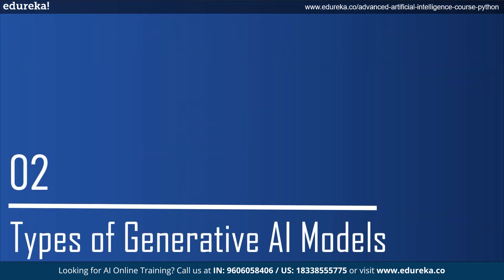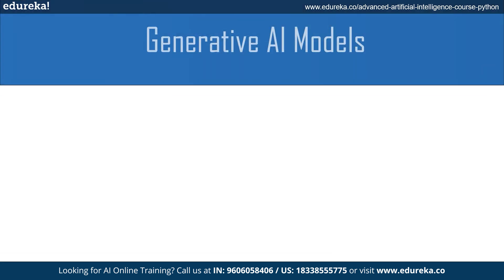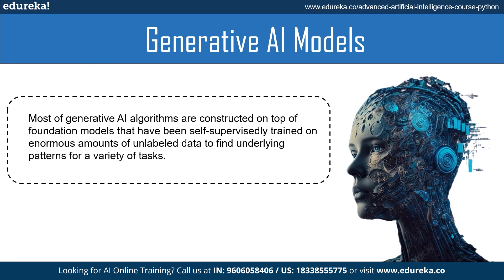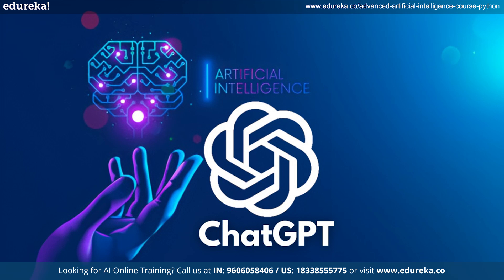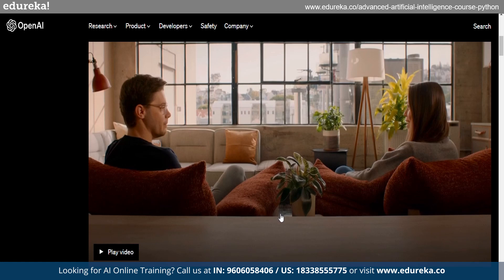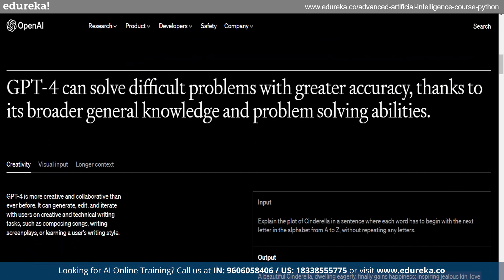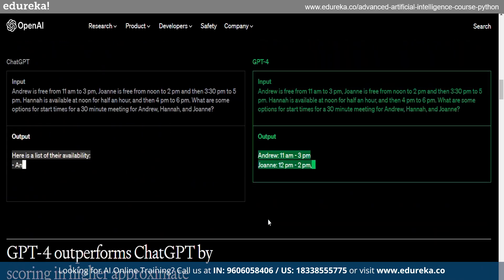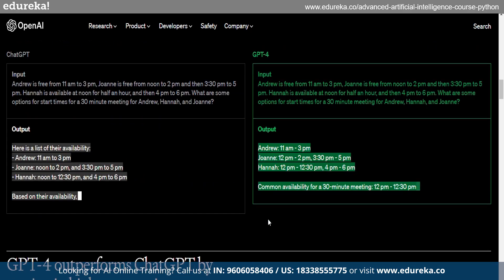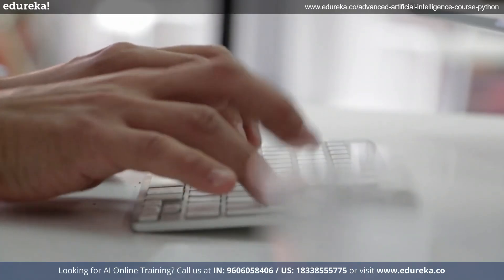Next, let's talk about the types of Generative AI models. Most Generative AI algorithms are constructed on top of foundation models that have been self-supervisedly trained on an enormous amount of unsupervised data to find underlying patterns for a variety of tasks. One example is ChatGPT, also called Generative Pre-trained Transformer — an auto-regressive model pre-trained on a corpus of text to produce natural language writing. GPT has been made adaptable for tasks including question answering, summarizing, and language translation.